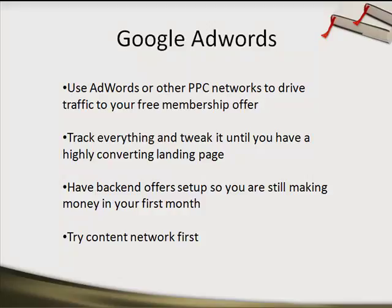If you have a $47 product, then a $97 product, and then a $47 down-sale, you can afford to have Google bring in people who opt in to your free month. They're in your free membership program, but you're also basically covering your cost with the back-end. The more people you bring into the program, the more money you'll make through your back-end offers, so it's very important to have a back-end offer.